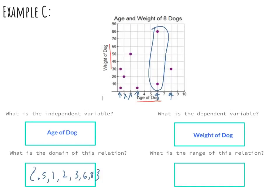Next we write down our range by reading the y values. The y-axis goes by 10s. We have points at 5, 10, 20, 30, 50, and 80. Even though there are a couple of points at 30, we only write it once. So our range with braces in order from least to greatest is: {5, 10, 20, 30, 50, 80}. The braces don't have to be perfectly drawn — just make them look like braces.